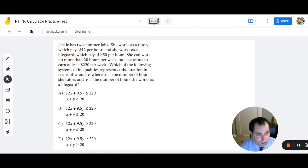Number 7. Jackie has two summer jobs. She works as a tutor, which pays $12 per hour, and she works as a lifeguard, which pays $9.50 per hour. She can work no more than 20 hours a week, but she wants to earn at least $220 per week. Which of the following systems of inequalities represents the situation in terms of X and Y, where X is the number of hours she tutors, and Y is the number she works as a lifeguard? So what jumped out at me is some of these inequalities because I noticed right away that the difference between each answer is the way the inequality is facing. So if I look to some of those key words with inequalities, for example, no more than 20. So it has to be, we're looking for less than or equal to 20.